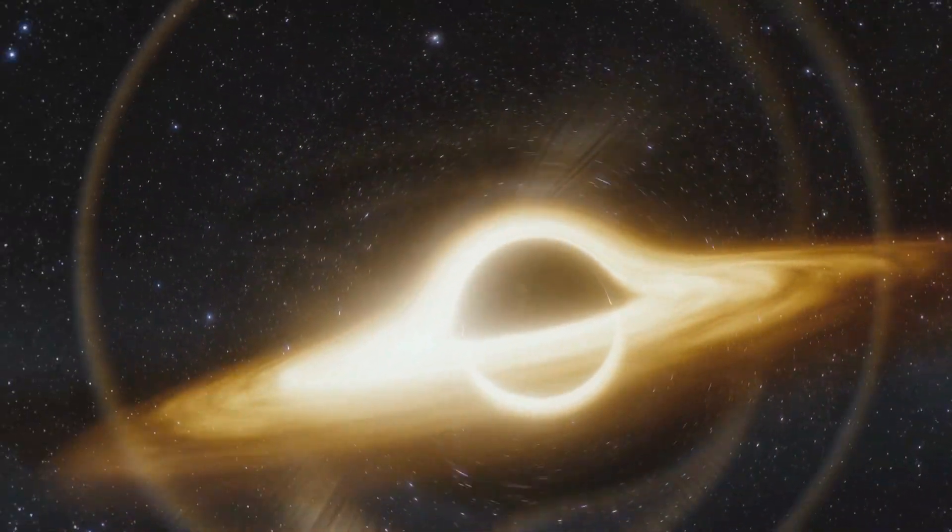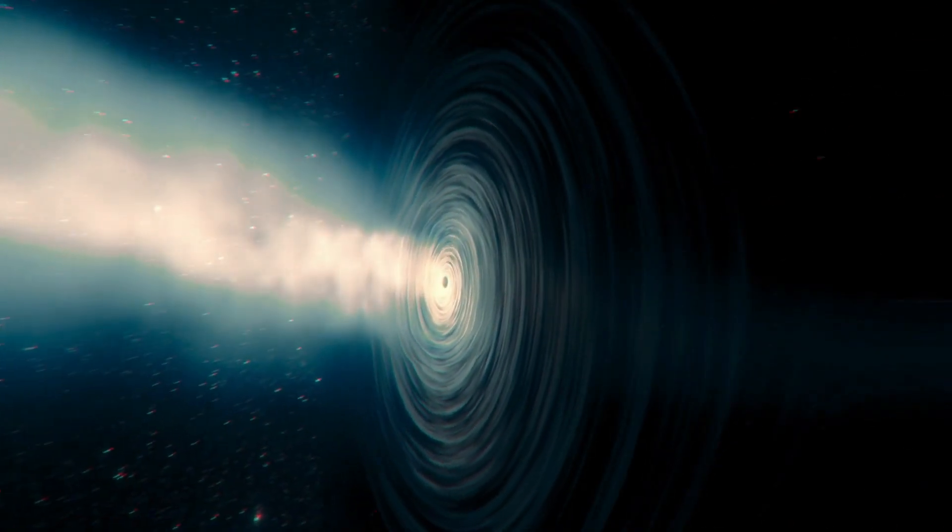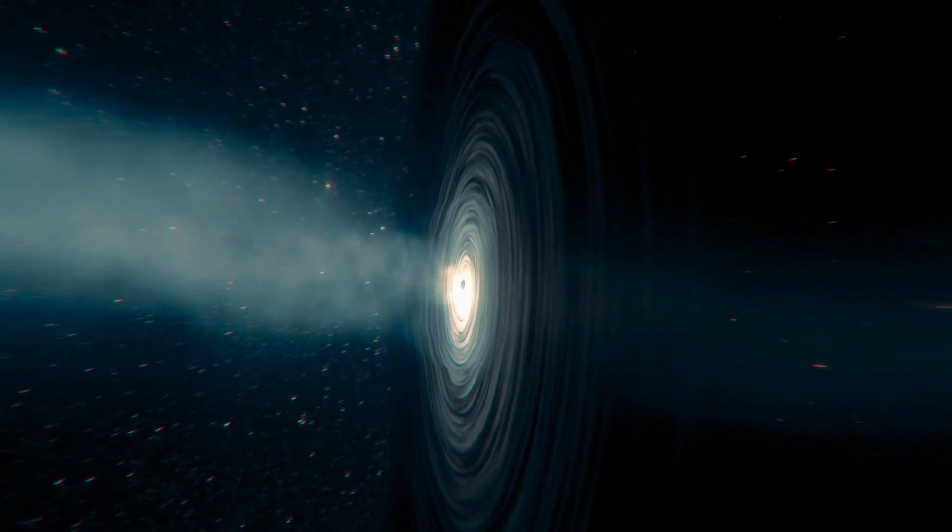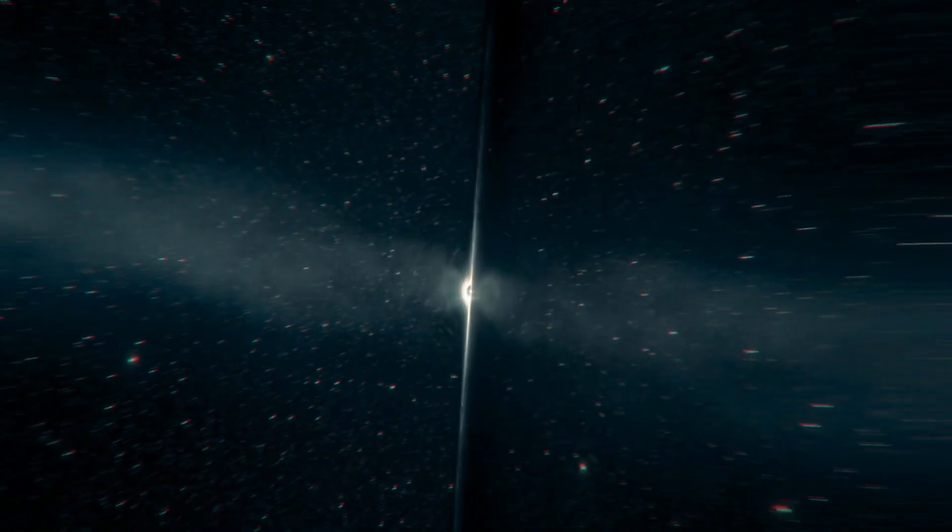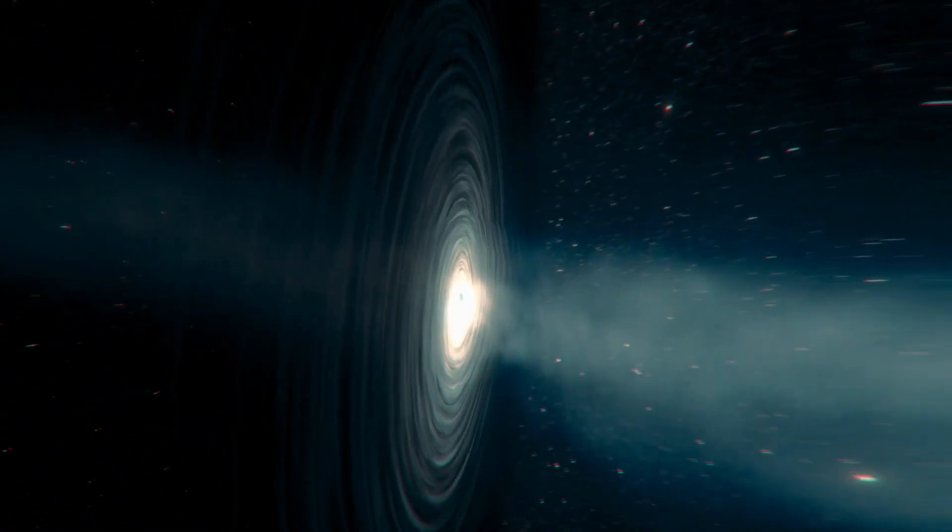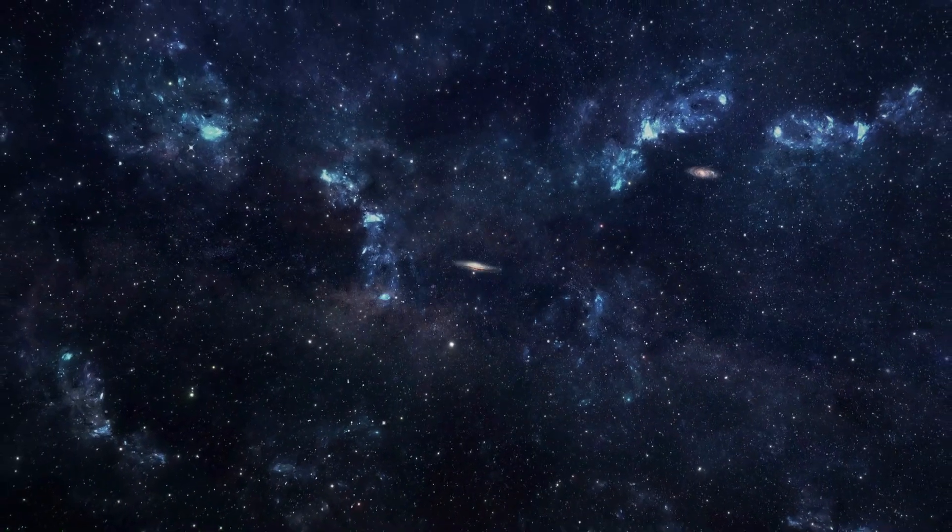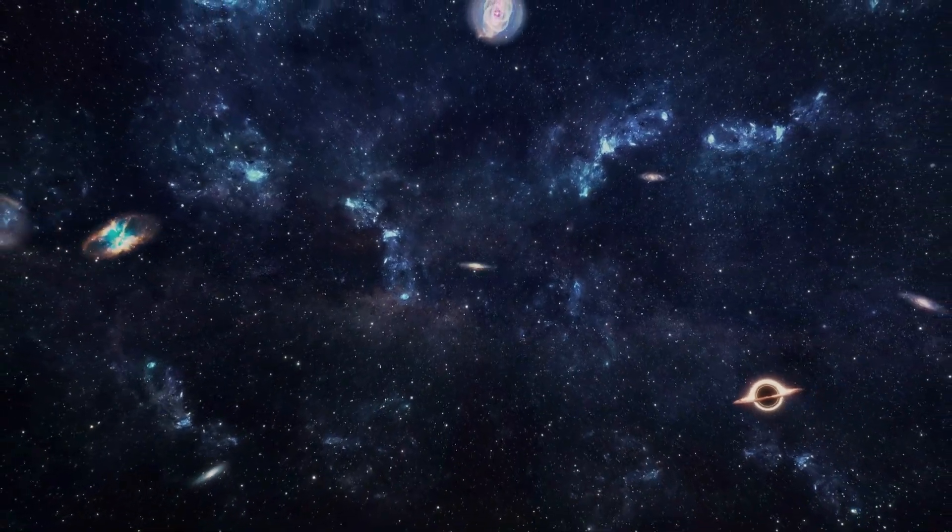When a small black hole comes near a planet or a star, its gravitational pull can cause disruption in their orbits. This disruption can cause the planet or star to be pulled out of its orbit and flung out into space. This can have catastrophic consequences for the planets and stars in the vicinity of the black hole.